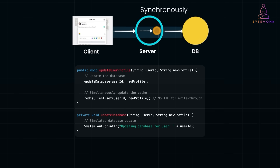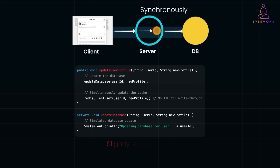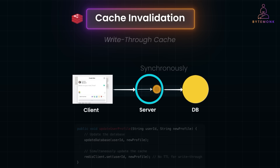In write-through, the application writes data to both the database and the cache at the same time, keeping the cache in sync with the database so reads can be served directly from it. The main benefit is that the cache is always up to date, and it's simple to implement for read-heavy systems. However, writes are slightly slower due to the synchronous nature of cache updates, and every database write triggers a cache update.